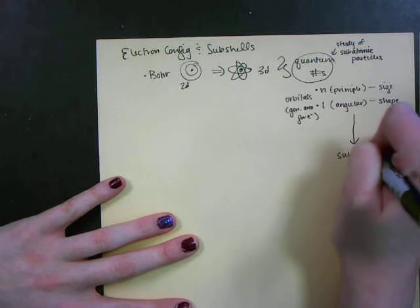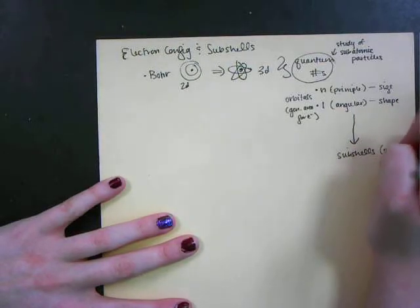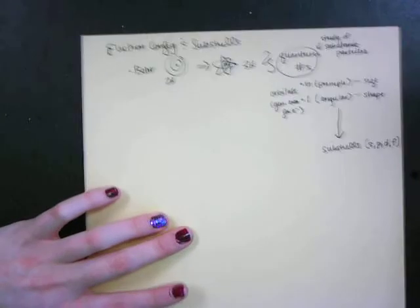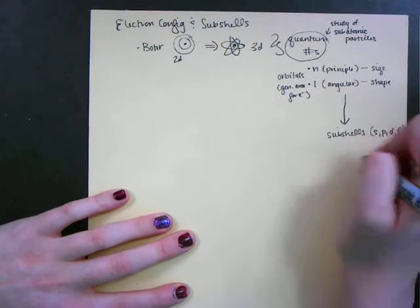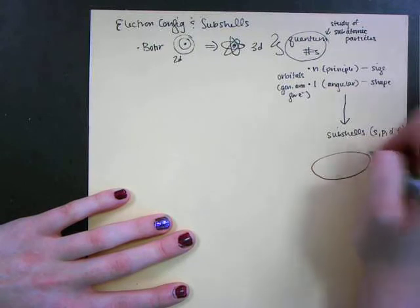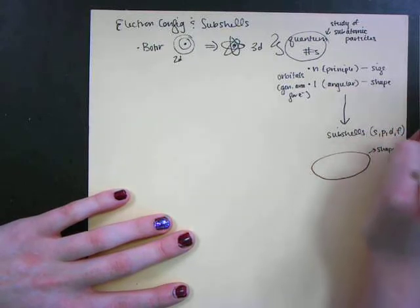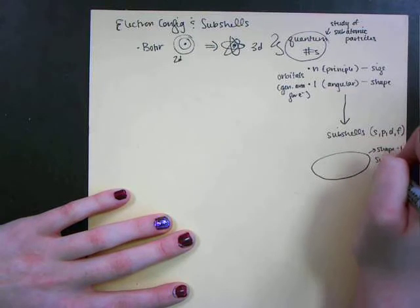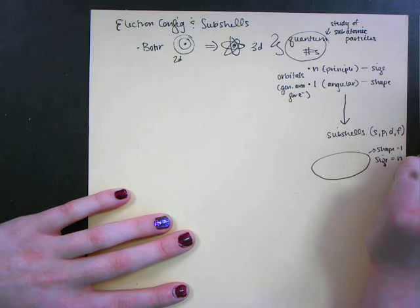We abbreviate those s, p, d, and f. Subshells are like my example of a football stadium. So the shape of the stadium is going to be l, how big the stadium is—if it's Arrowhead, that's going to be the n quantum number. If it's where Lincoln plays, it's going to be much smaller.